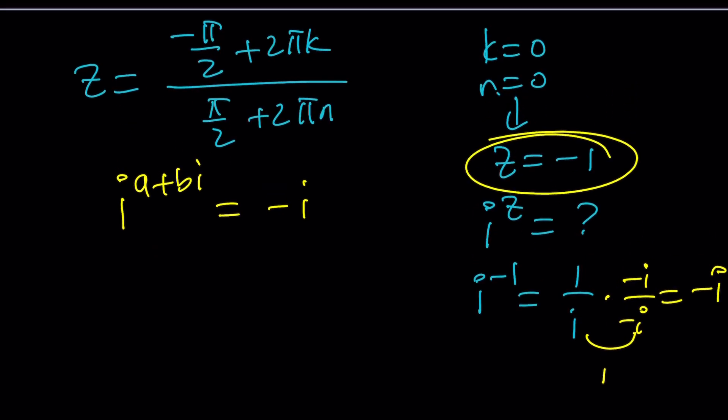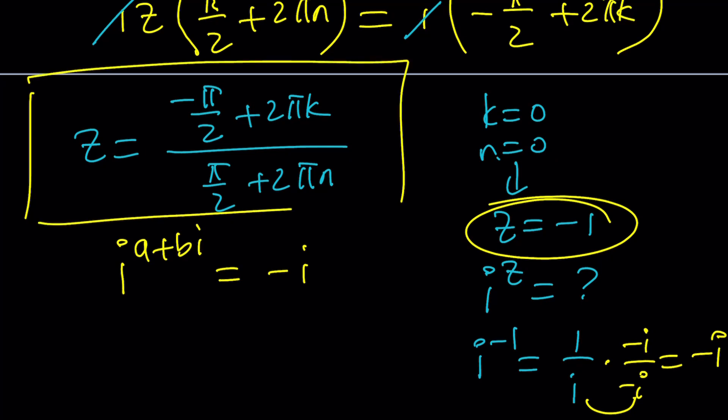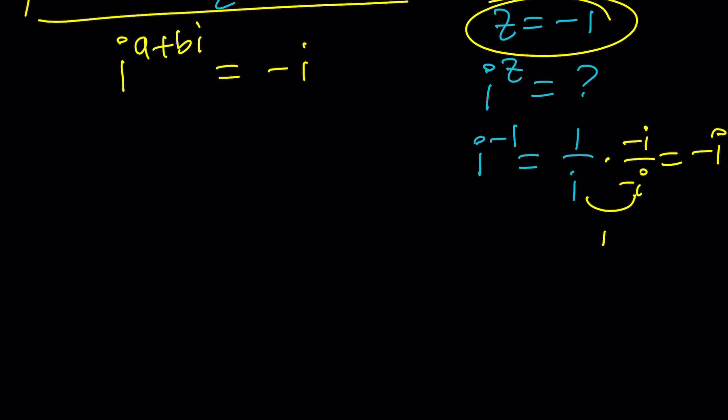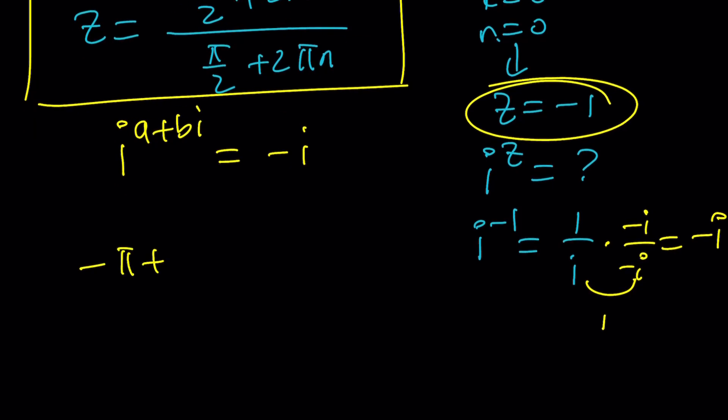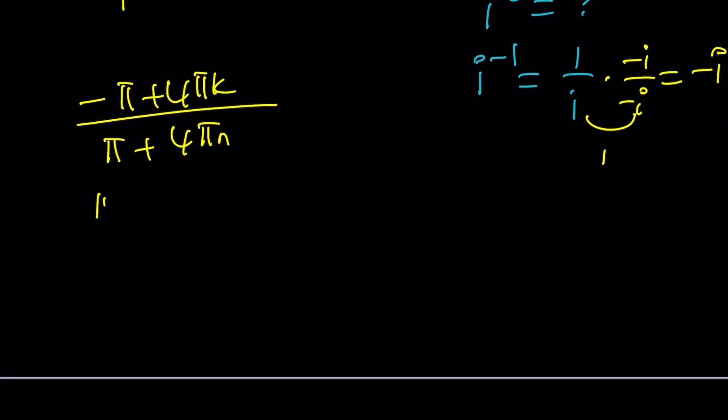Now, so far we got this expression, but that's too general. And do you think it is always going to work? So let's go ahead and simplify this a little bit. I would probably just multiply everything by 2. And that would give me negative pi plus 4 pi k divided by pi plus 4 pi n. And then I would probably just factor out a pi. That would give me 4k minus 1 divided by 4n plus 1.